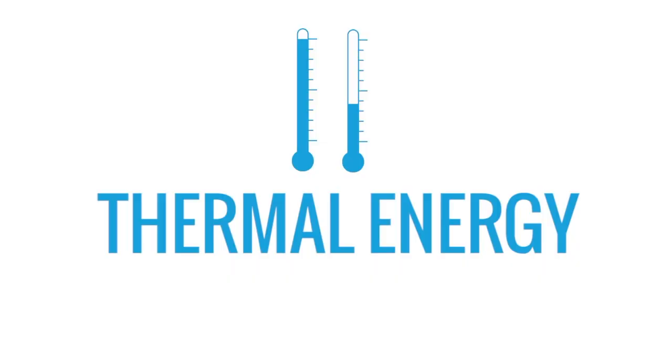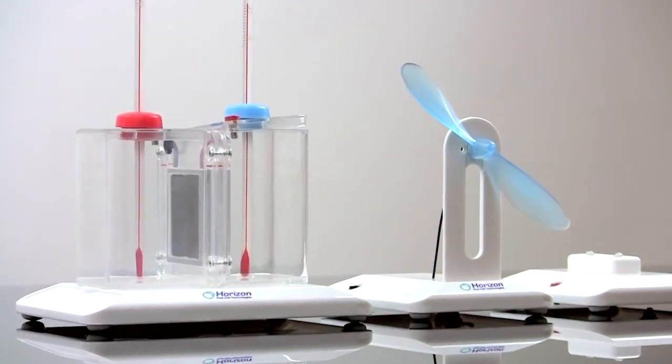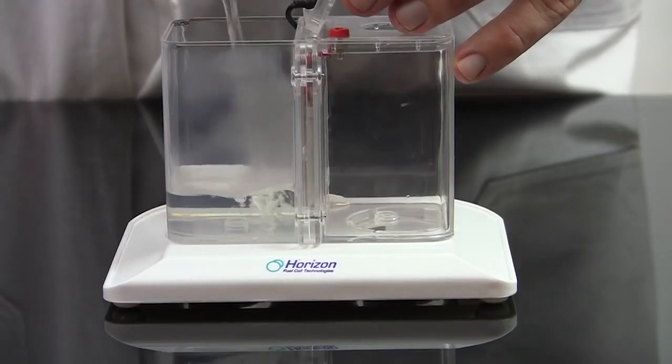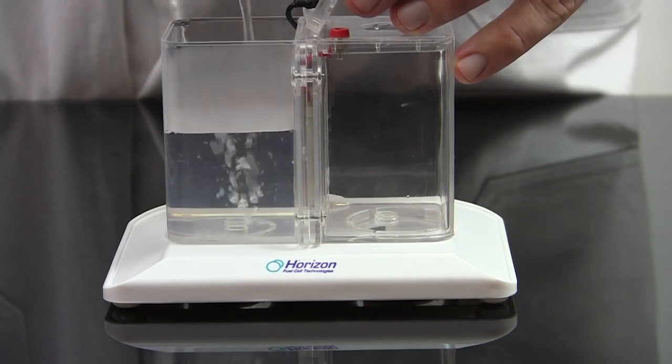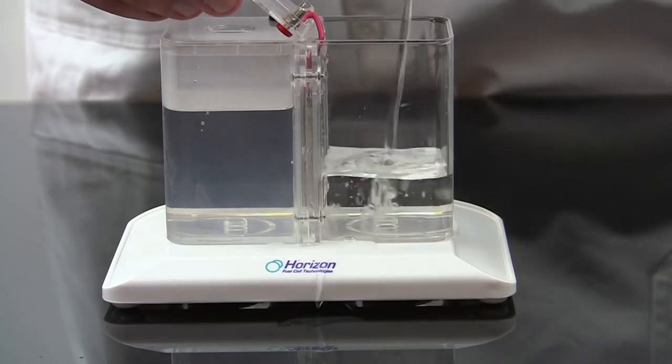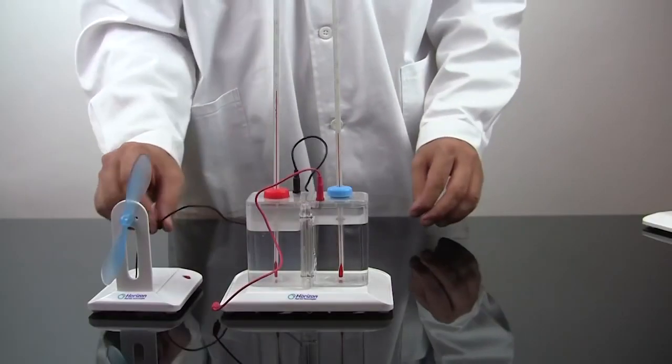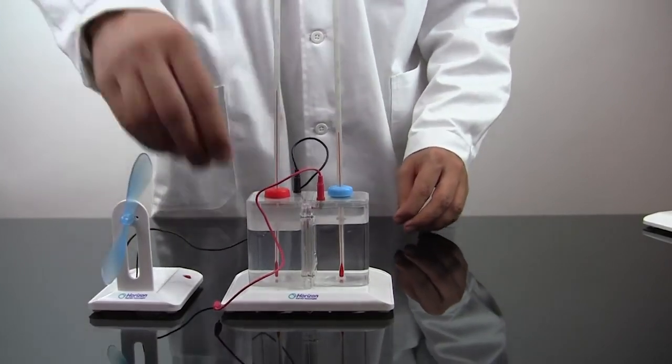The thermoelectric generator needs only hot and cold water to generate an electric current. Pour hot water into the side with the black wire contact and cold water into the red wire side. Students can measure the temperature of each side with the included thermometers. The bigger the temperature difference, the more current it creates.